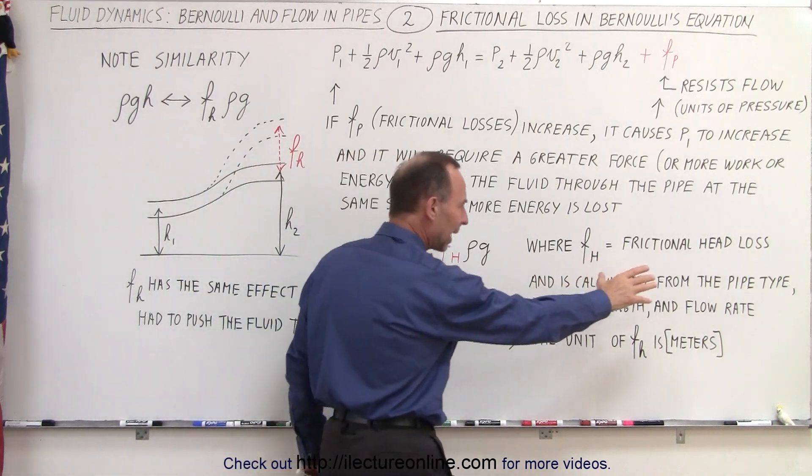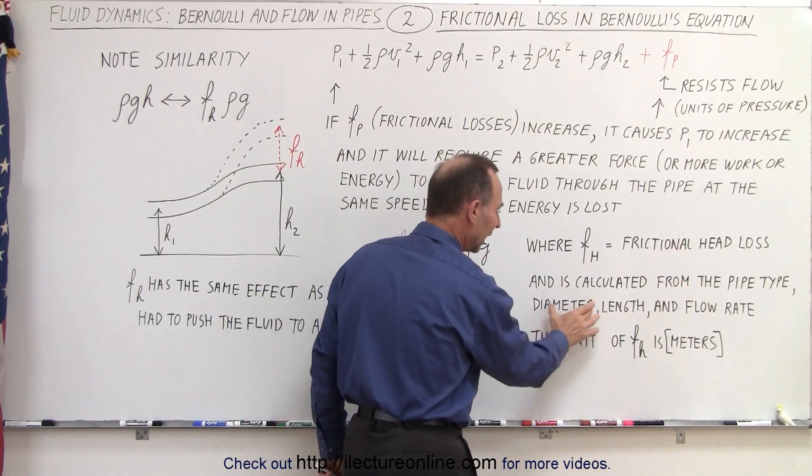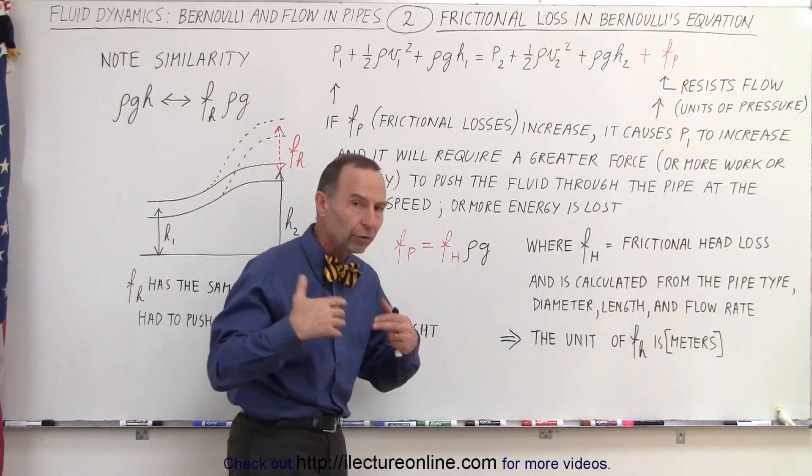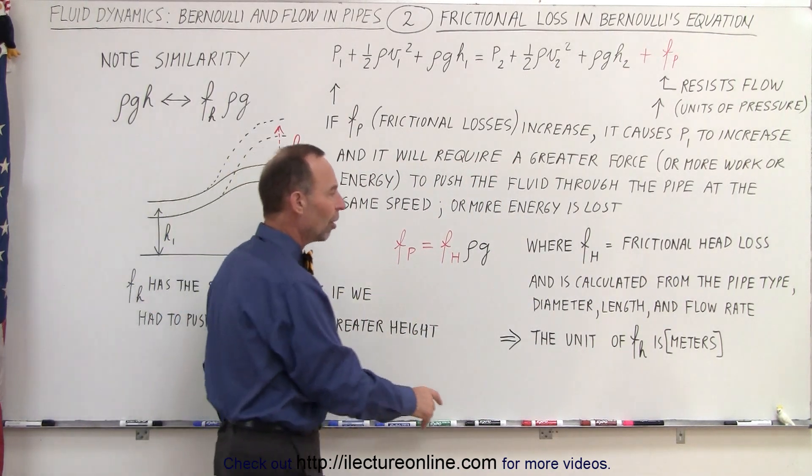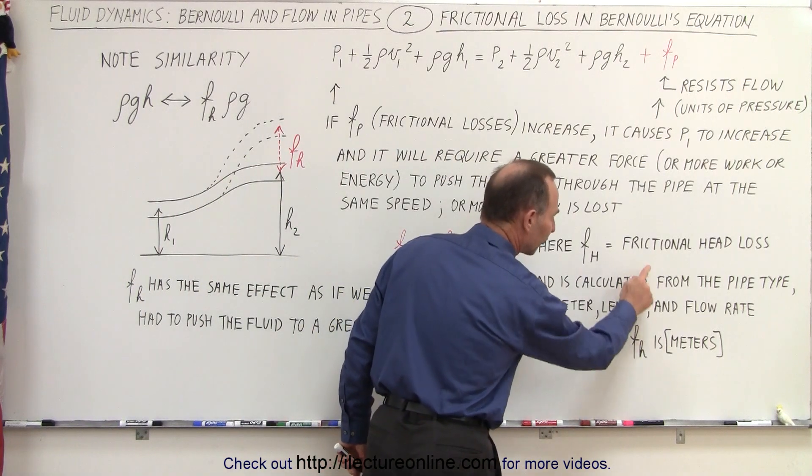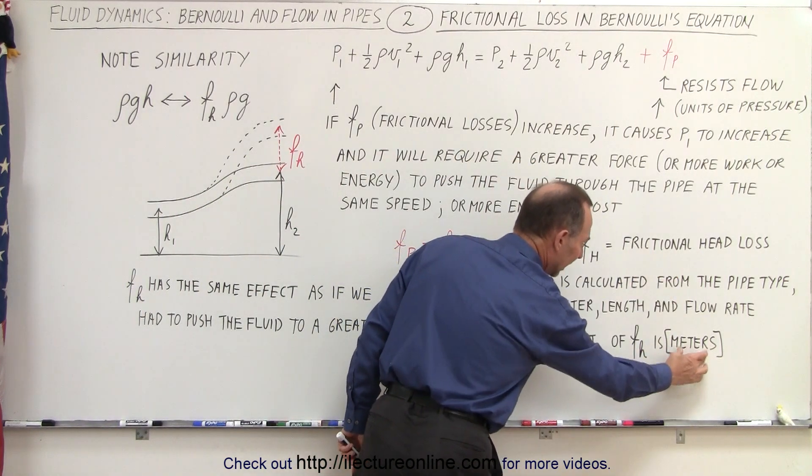It is calculated from the pipe type, diameter, length, and flow rate - all those things that add to the frictional losses in the pipe. The units of F sub H, the frictional head loss, are in meters.